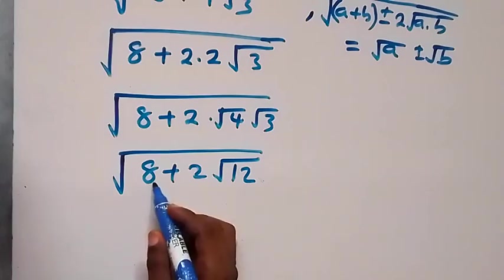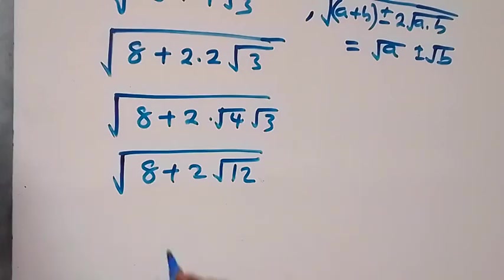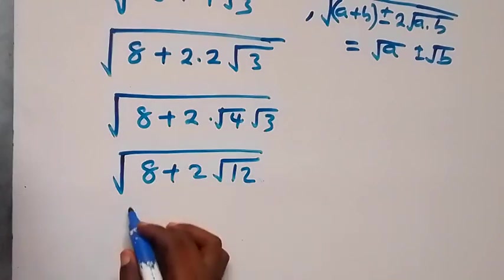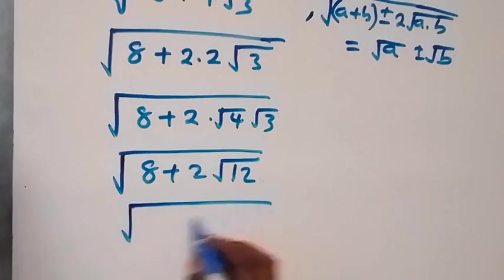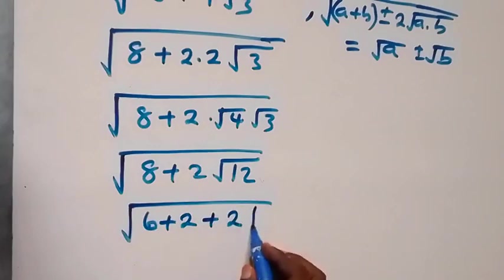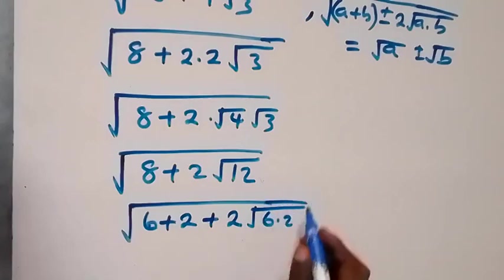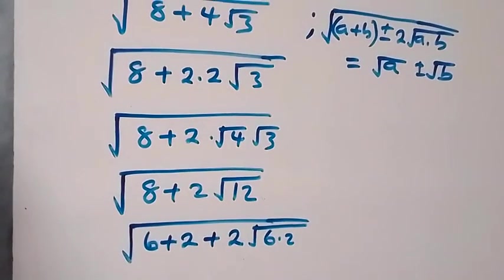As 6 plus 2, and then we can also separate this as 6 times 2. So we have root 6 plus 2, then plus 2 times root 6 times 2.